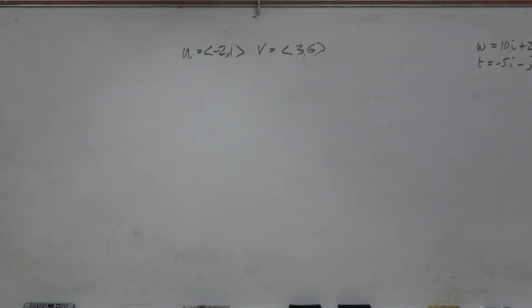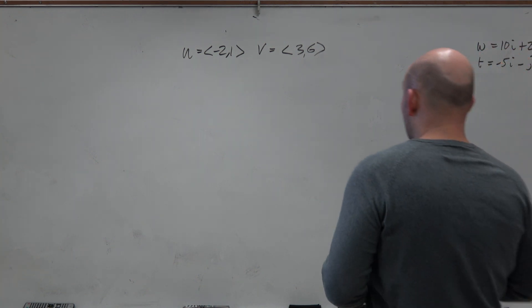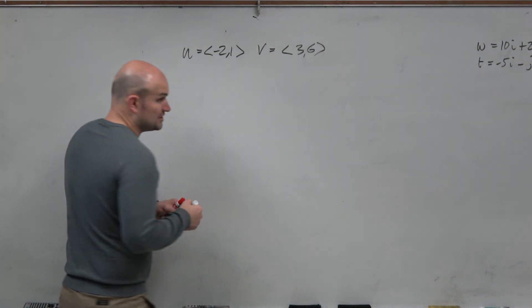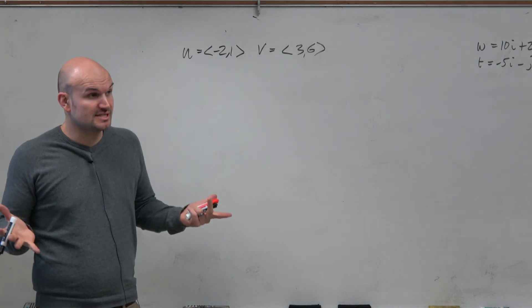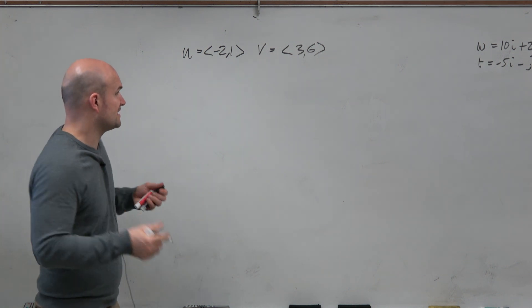So in this example, if we need to identify if they're going to be parallel or perpendicular, basically if you notice the definition, the first thing we're going to do is just identify the dot product. If the dot product is equal to 0, then we know we're going to have two orthogonal vectors.